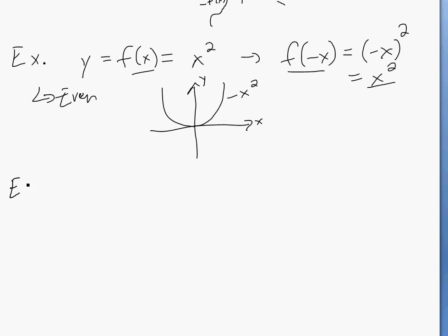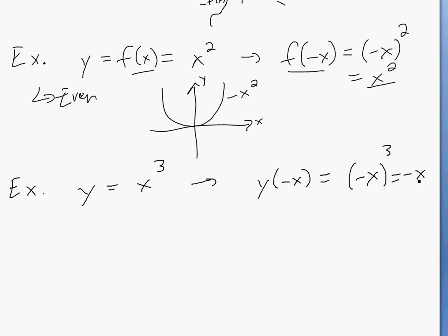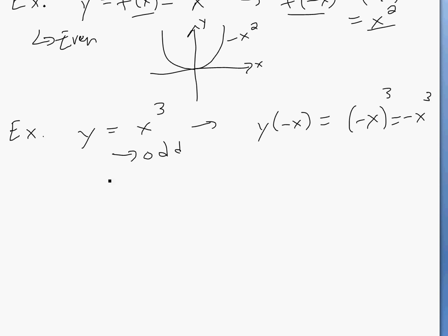If you were to graph y equals x cubed, and put f of negative x, this would equal negative x cubed — and this equals negative f of x. So this one is odd. If you were to graph it, it goes up on one side and down on the other — that's x cubed.